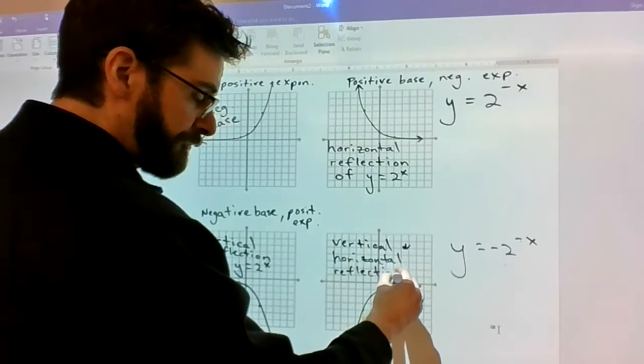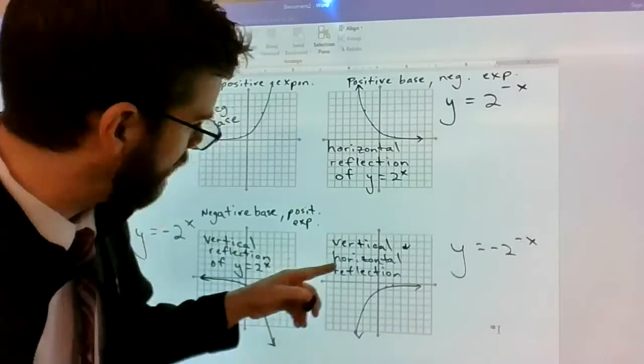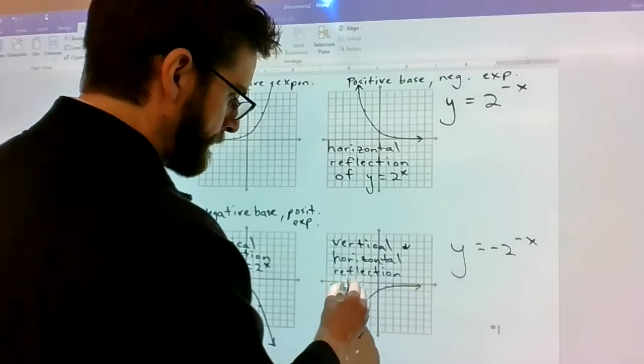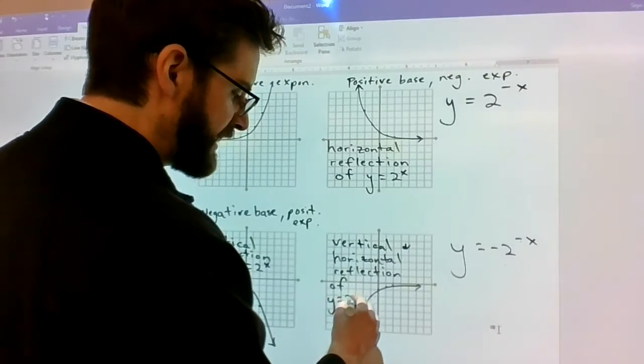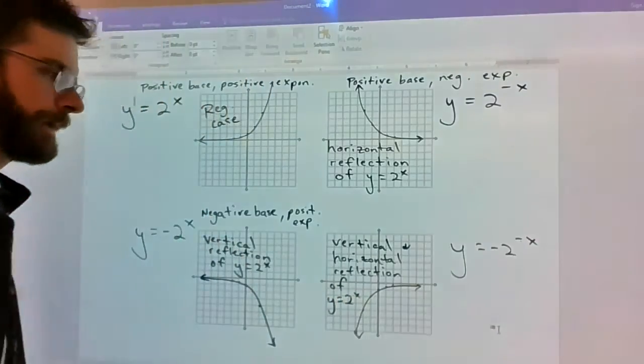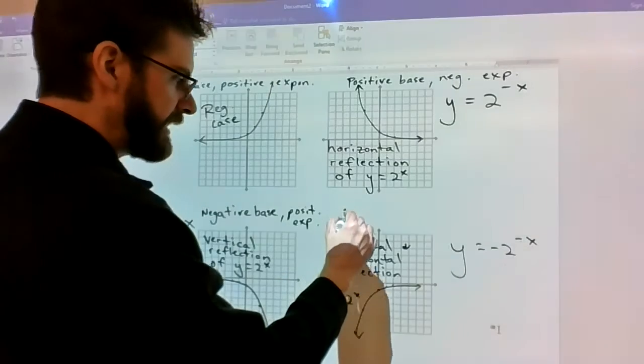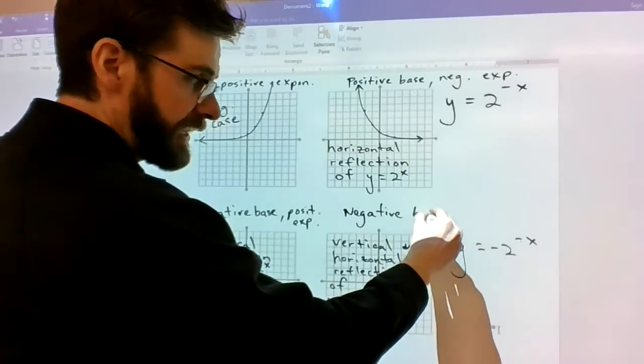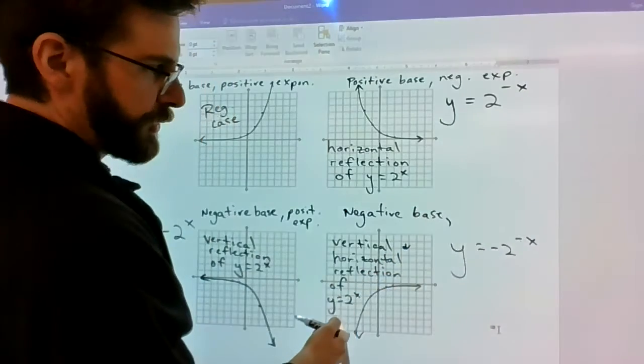And when we say it's a reflection, it's a reflection of the regular case, y equals 2 to the x. Yeah, so negative base and a negative exponent creates this situation.